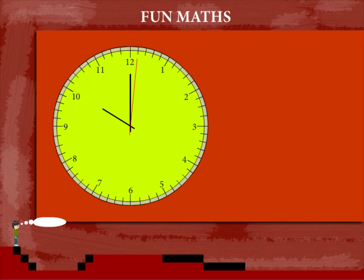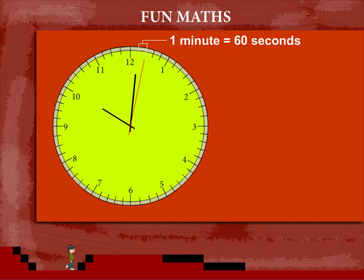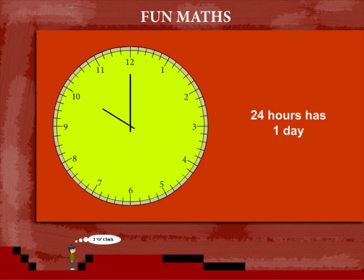Fun maths! Here is a clock. One round of the second hand makes one minute, or 60 seconds.